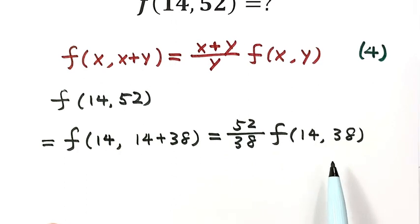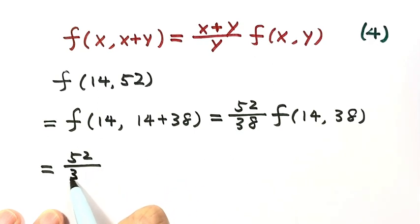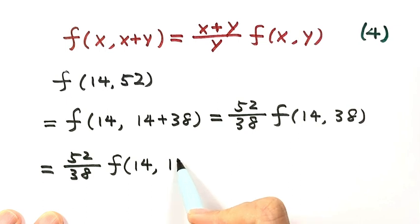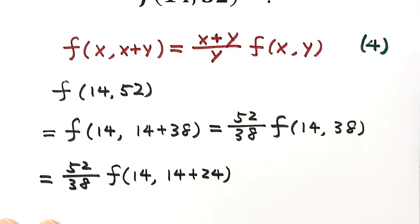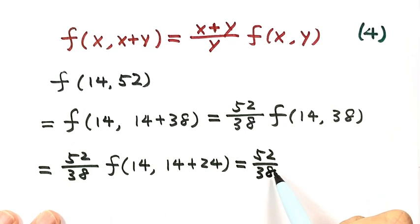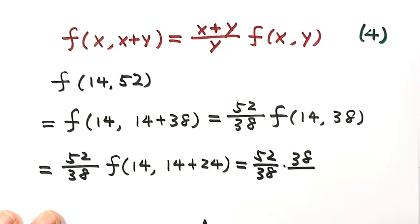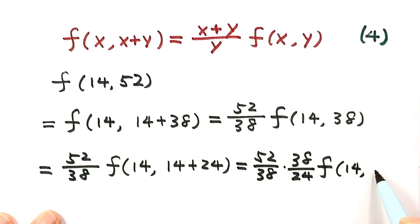For f(14, 38), we use Identity 4 again. We rewrite 38 as 14 plus 24, so applying the identity gives us (38/24) times f(14, 24).